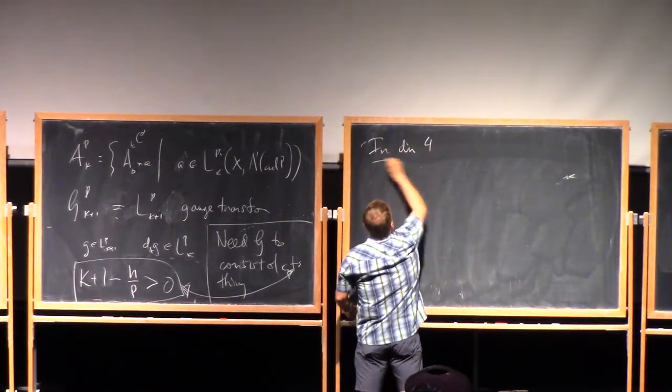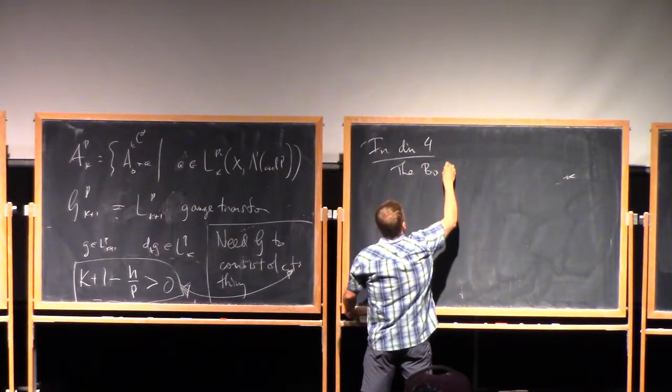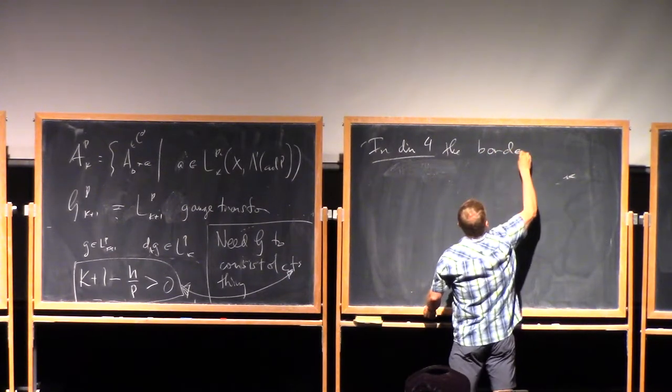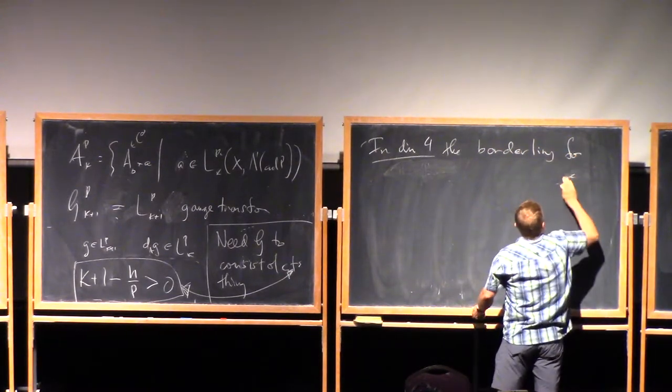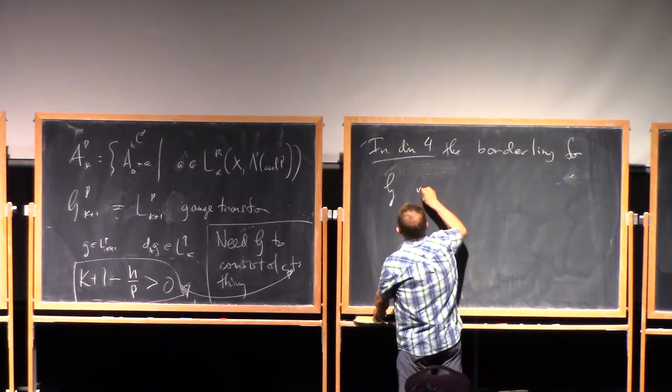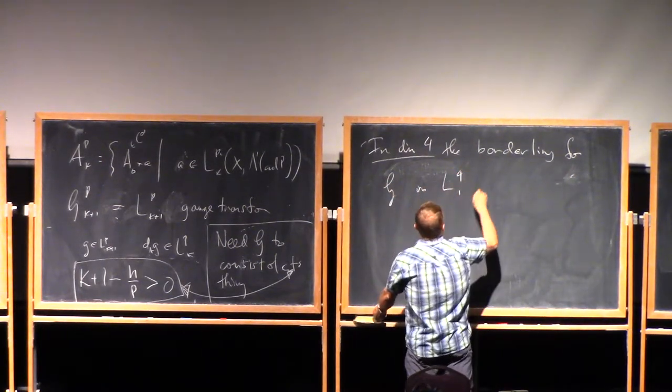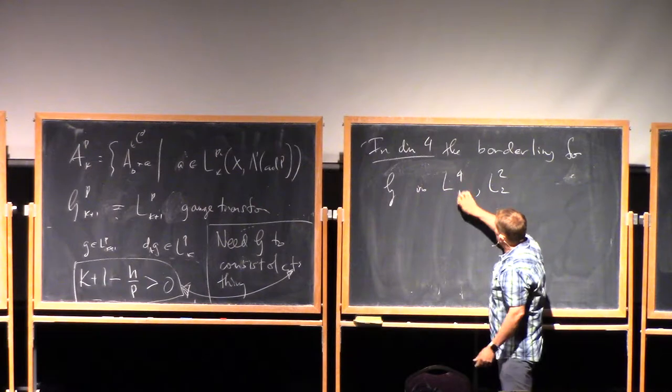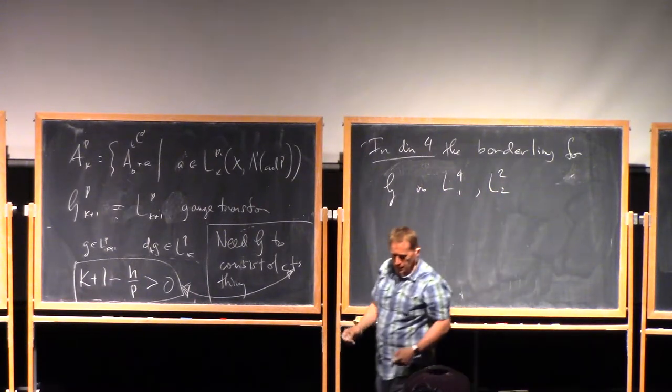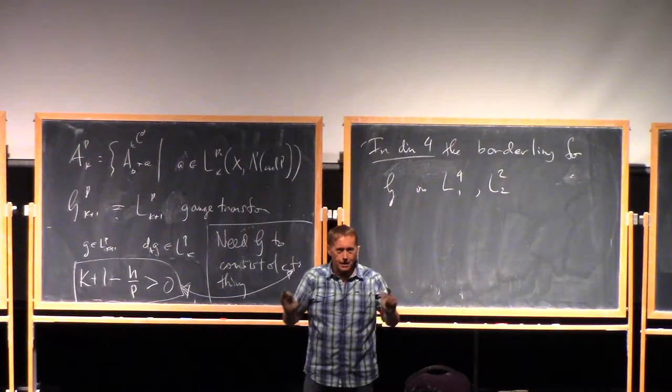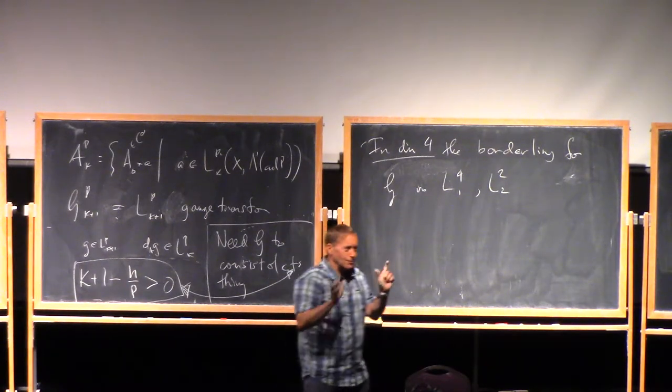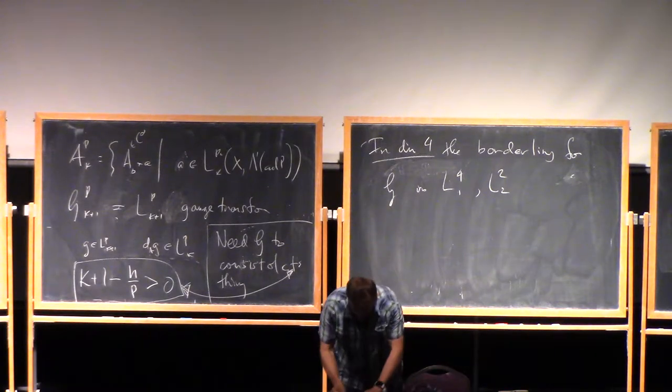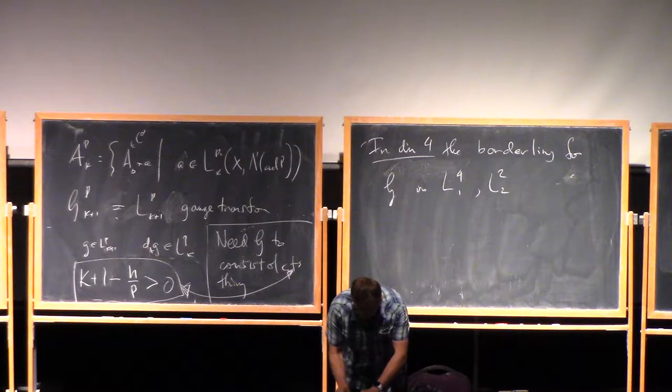In dimension four, the borderline for G is either L41 or L22. Anything a little stronger than this will work. You can still work at the borderline, but it's a little trickier. It's a bit radioactive. You have to make sure you wear your protective gear because it's easy to make mistakes. But it's still very useful to do things at that level.